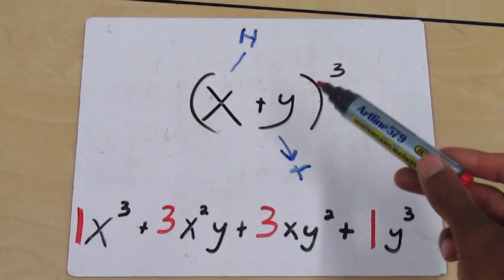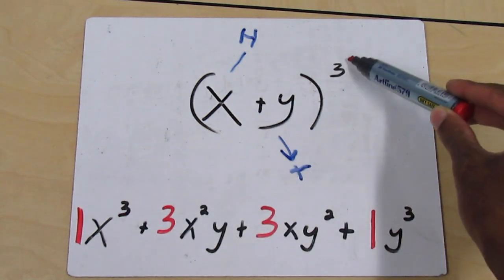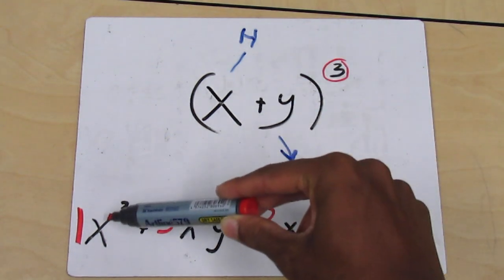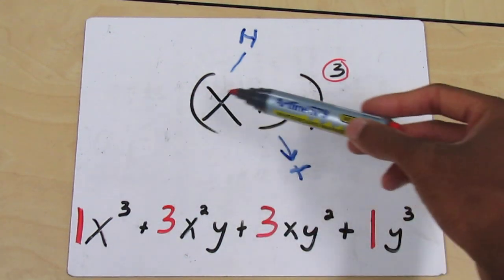So your x's and your y's are there. But the thing you need to know is that your x and y can only add up to 3, the exponent on both of them. So your first one, your x will have an exponent of 3 and your y will have an exponent of 0.